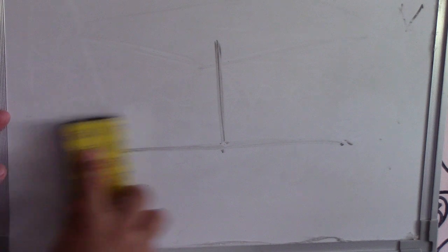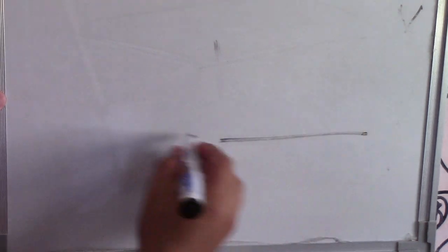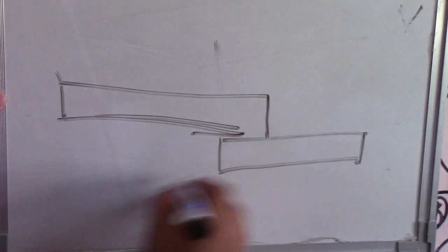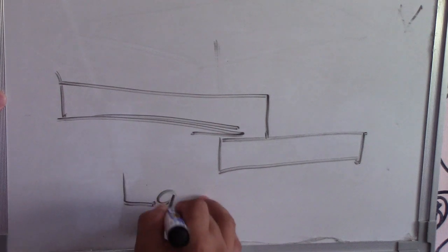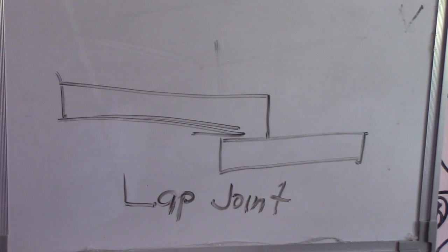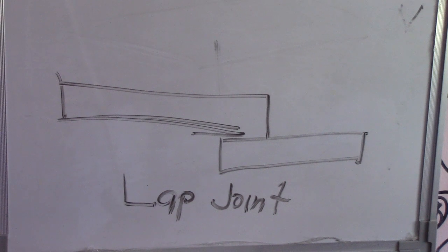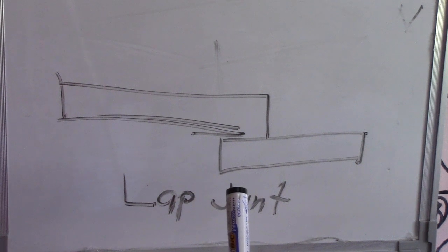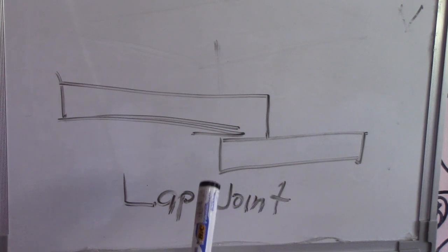Number four is lap joint. Here is our workpiece, and here is another workpiece overlapping it — this is the lap joint. The applicable welds and weld symbols for lap joint are: fillet, bevel groove, flare V groove, J groove, square groove, plug, slot, spot, seam, projection, and brace.